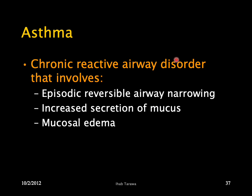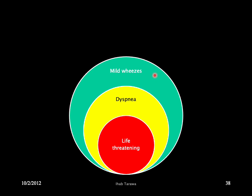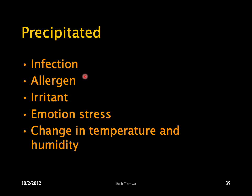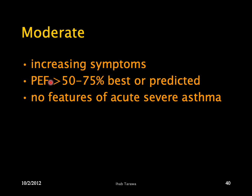One of the chronic illnesses requiring respiratory support is asthma — a chronic reactive airway disease with episodic, reversible airway narrowing. It increases secretion of mucus and causes mucosal edema. Asthma can be precipitated by infection, allergens, irritants, emotional stress, or changes in temperature and humidity. Moderate asthma involves increased symptoms with PEF less than 50–75% of predicted, without features of acute severe asthma.